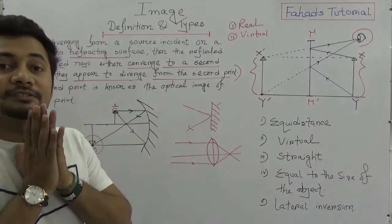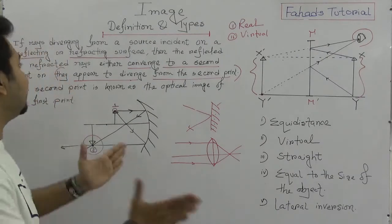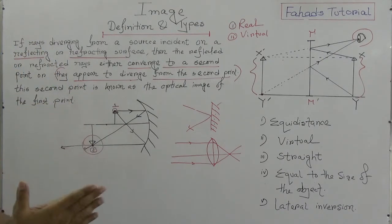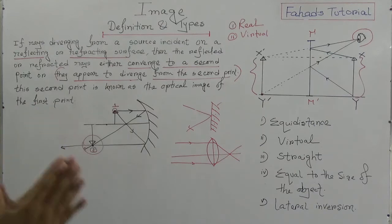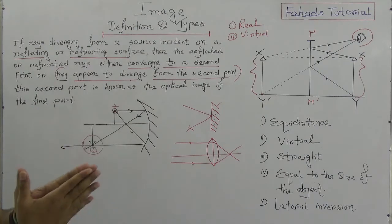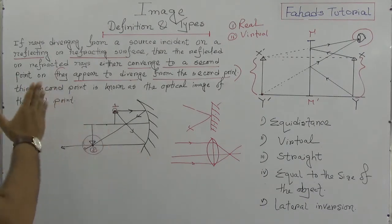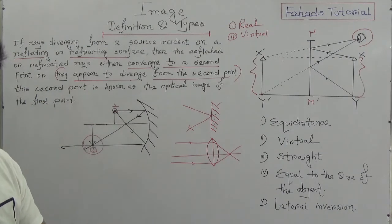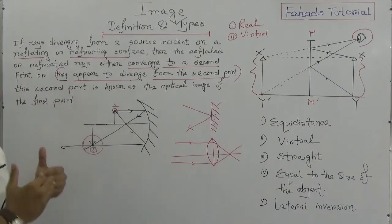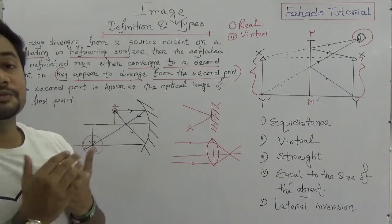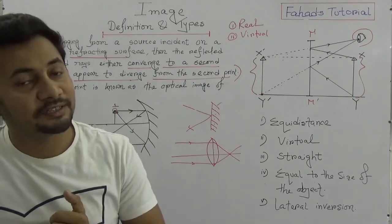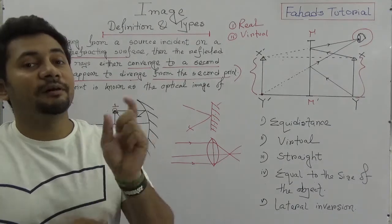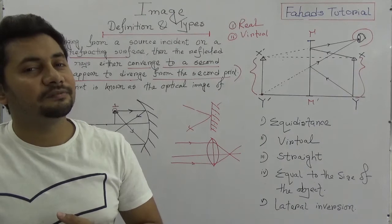So in summary: if rays diverging from a source are incident on a reflecting or refracting surface, then the reflected or refracted rays either converge to a second point, or they appear to diverge from the second point. And that second point is known as the optical image of the first point.